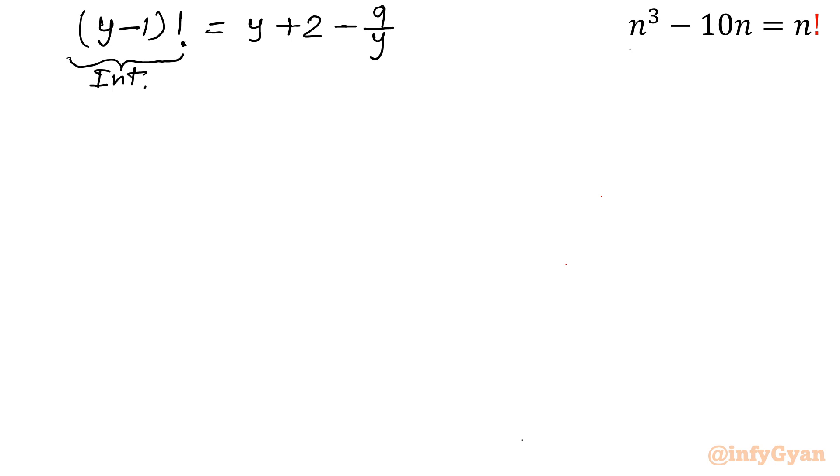And the second important thing: it should be positive integer, because left hand side is factorial function. So right hand side must be positive. That value would always be positive. So from here I will write y + 2 should be greater than 9/y. This is the first point I will conclude from here. And the second point which I will conclude: because of left and right side, it is nothing but the addition of integers, so y must have a common factor with 9.